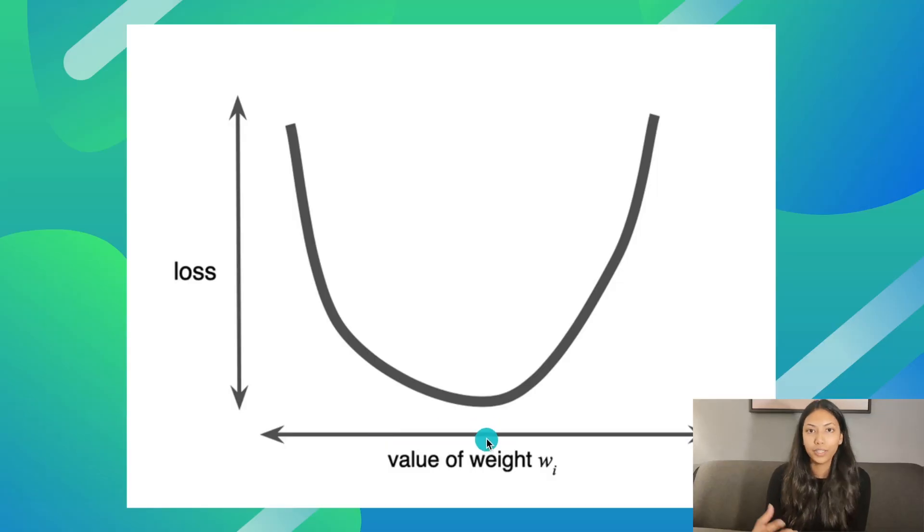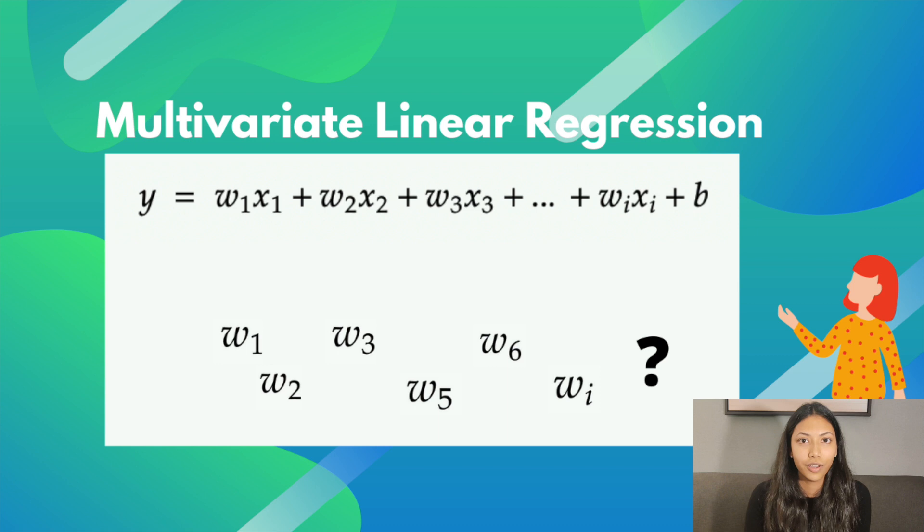Now, do you guys remember in the last video where I talked about how to find these values of w's and the value of c? Well, you would actually put in random values for them. And the value which gives you the least error is the most optimum values for all of these w's and c's. But that might be an easy scenario if you only have one variable. So you only have one w to actually think about and compare. But what about in multivariate linear regression where you have a lot of different features? So you have multiple w values, where each w can be any value. And how do you actually try to plug in the best values, the optimal values in order to get the least error value?